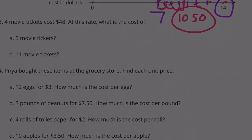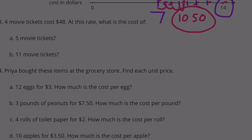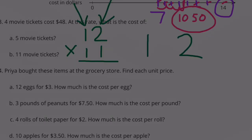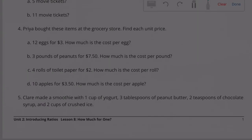(b) Eleven movie tickets: since we figured out one movie ticket is $12, we can do $12 times 11. I know a trick for multiplying a two-digit number by 11: rewrite the digits with a gap in the middle and add them together — one plus two is three, so it becomes 132. Eleven times twelve is $132, so you'd spend $132 to buy eleven movie tickets.